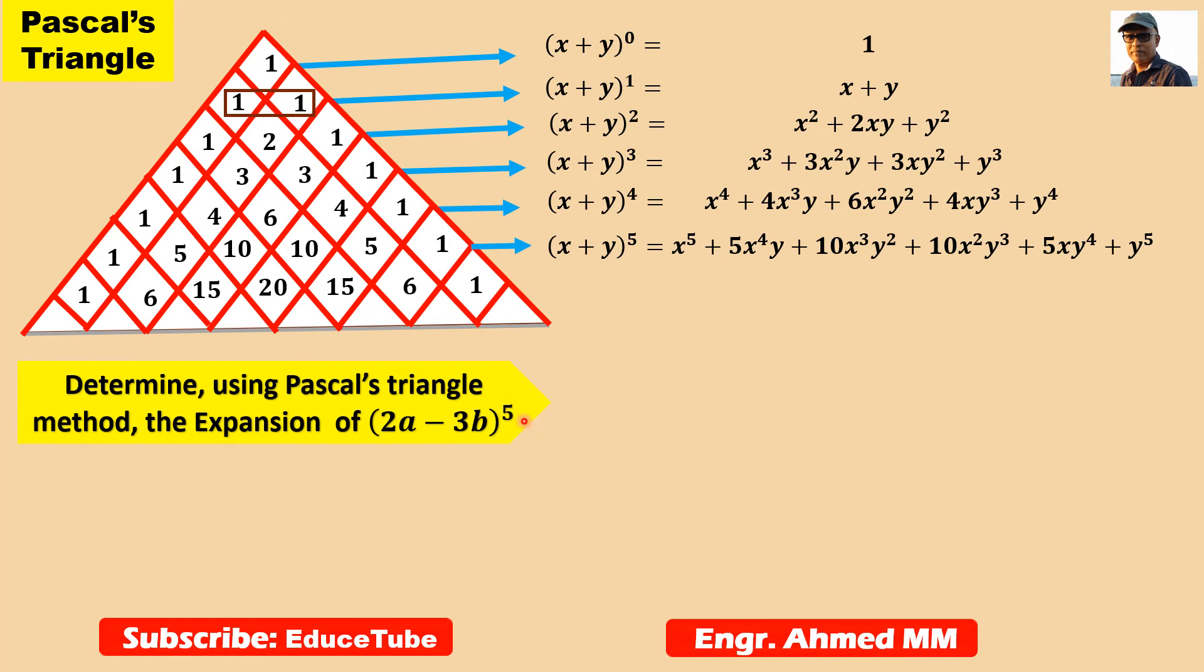So this is power five, so we will use this line. The only difference is this is x and y, but here it is 2a minus 3b. So we compare these and can assume: if we compare, in x position it is 2a, so x equals 2a. And y is minus 3b, so y equals minus 3b.